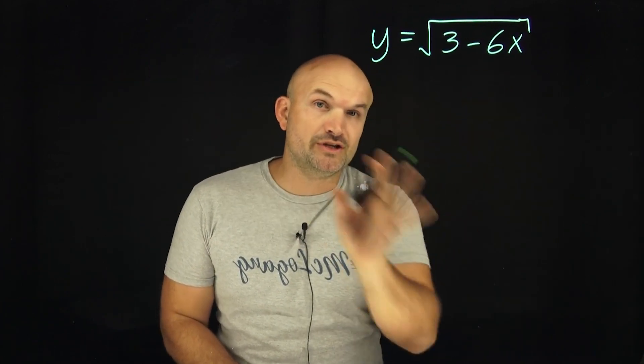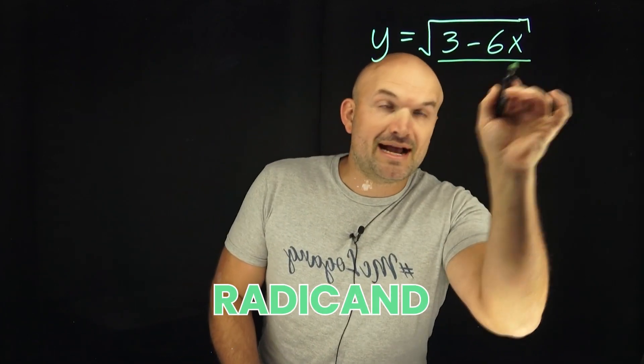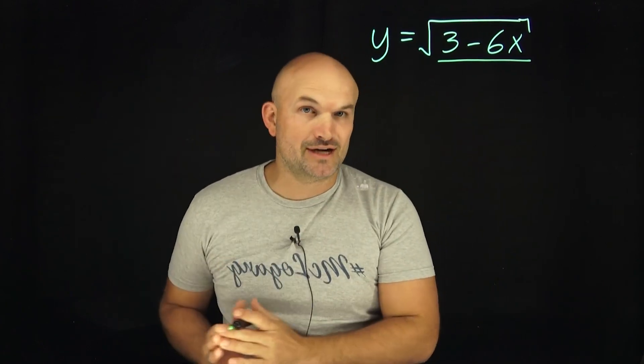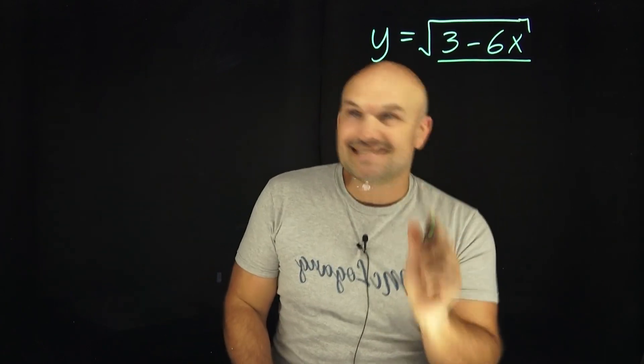When you have a square root function, what you want to do when you're trying to find the domain is take the radicand, what is under the radical, and set it greater or equal to zero. And then we're going to solve for x. That is going to give us our domain.